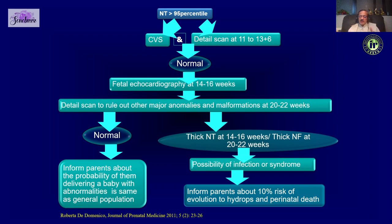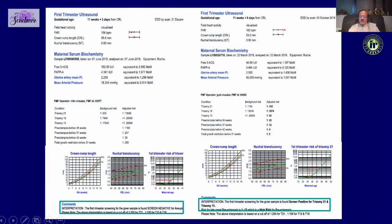If everything is fine and the NT disappears, that is good enough. If it persists, look out for other syndromes and inform parents there is a 10% risk of progression to hydrops. But if it disappears and all tests are normal, the outcome is quite normal and the baby will be as good as anyone else in the general population. This is very important for counseling.